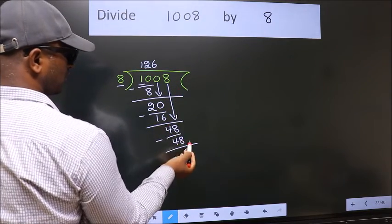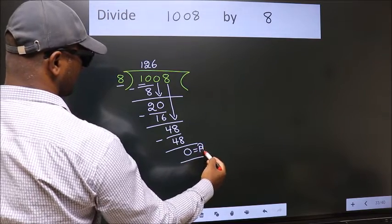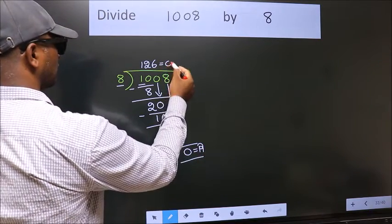No more numbers to bring down, so we stop here. This is our remainder. This is our quotient.